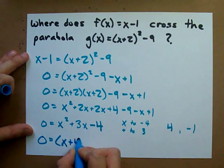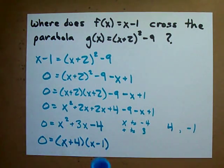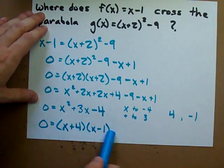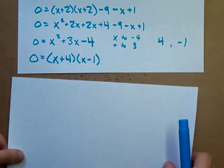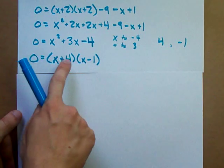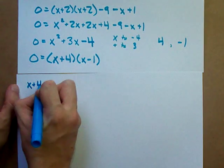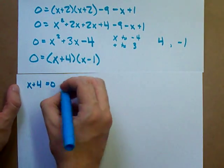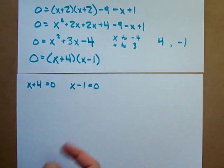So, the factored form is x plus 4, x minus 1. Check. Still have to solve for x, though. So, in order for the product of these two to be 0, either x plus 4 is 0, or x minus 1 is 0. Those are the two possibilities.